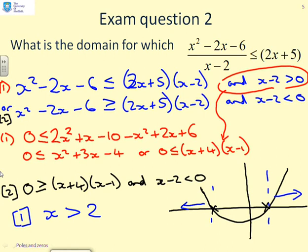What about condition 2? Condition 2 said you need 0 greater than or equal to x plus 4 times x minus 1, and x minus 2 less than 0, which means x less than 2. So you get the region in between the roots — minus 4 less than or equal to x less than or equal to 1. Combining both conditions, the full solution is x greater than 2, or minus 4 less than or equal to x less than or equal to 1.